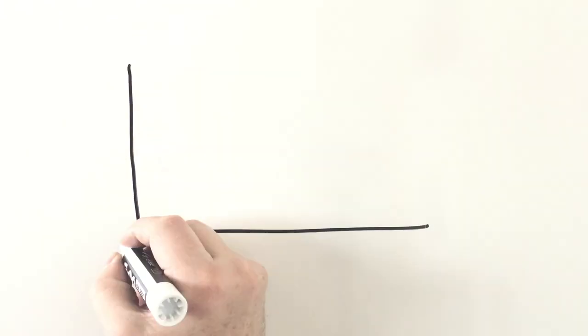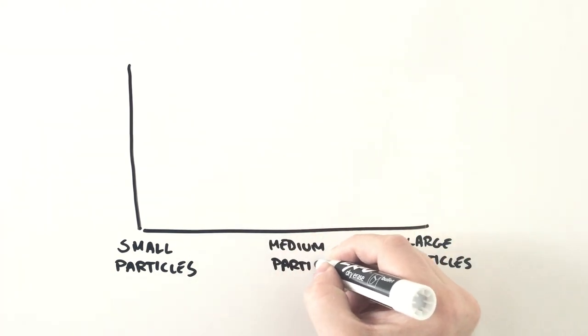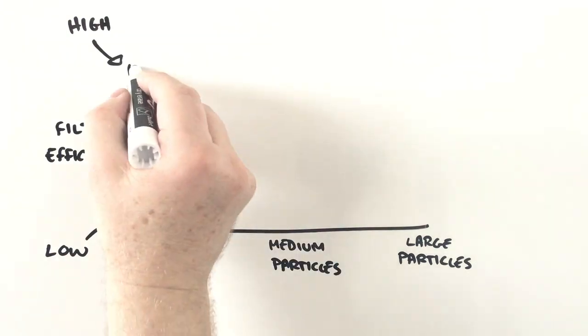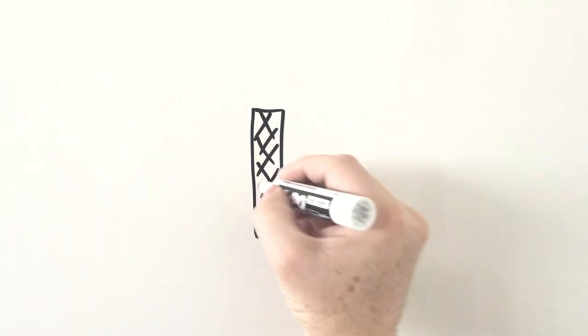So at the end of the day, it's not the smallest airborne particles that are the hardest to filter out, but the medium-sized ones—those that are too small to be captured through inertia, but too large to be captured through Brownian motion.